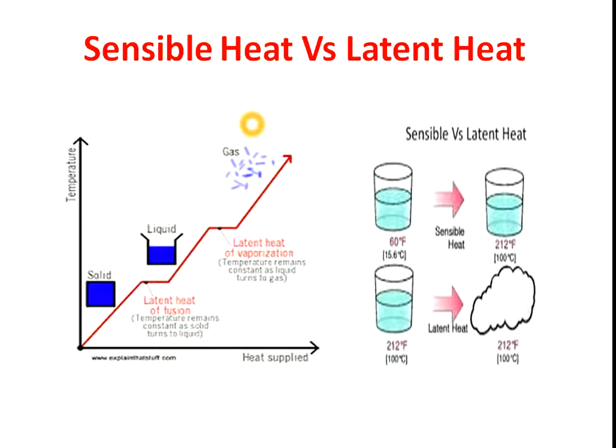Suppose this is a liquid — this is water at 20 degrees Celsius. Now we are supplying heat to this water and its temperature starts to rise from 20 to 40, then 60, then 80, and finally it reaches its boiling point at 100 degrees Celsius. So all the heat we supplied to this liquid for raising its temperature from 20 degrees Celsius to 100 degrees Celsius is known as sensible heat.